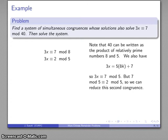Remember, one of the nice things about working mod anything is you don't have to work with a number greater than or equal to the modulus. So I can reduce 3x ≡ 7 mod 5 to 3x ≡ 2 mod 5. Now I'll apply the Chinese remainder theorem algorithm.